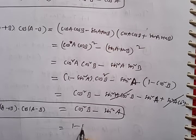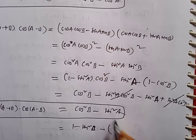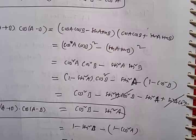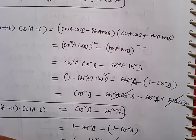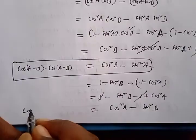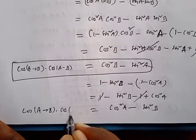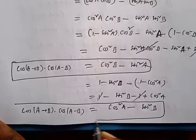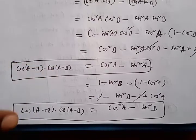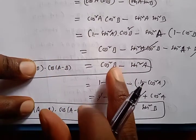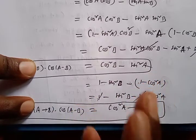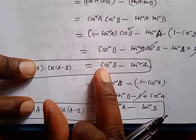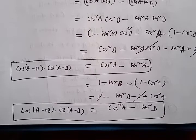Alternatively, we can convert cos²B to (1 - sin²B) and sin²A to (1 - cos²A). After expanding and cancelling the ±1 terms, we get cos²A - sin²B. So cos(A+B)·cos(A-B) = cos²B - sin²A = cos²A - sin²B. Note: this formula always has one cos term and one sin term, and if one angle is A the other is B.